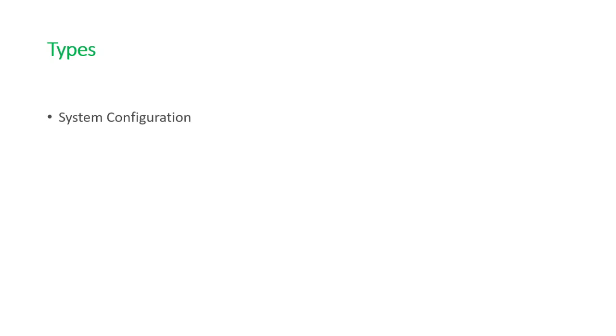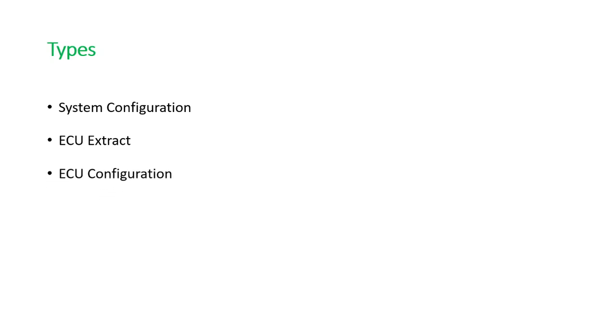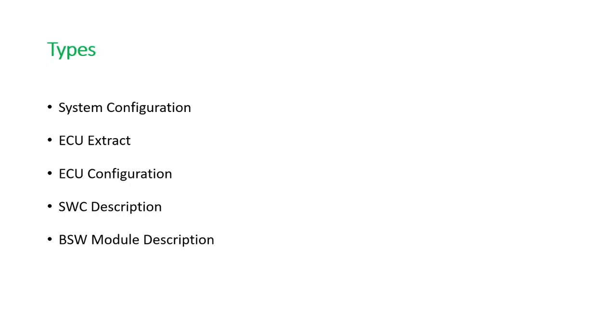How many types of ARXML files are available based on the data represented? ARXML files can be classified into five types: System Configuration, ECU Extract, ECU Configuration, Software Component Description, and BSW Module Description. We'll briefly see what type of data goes into each ARXML file.